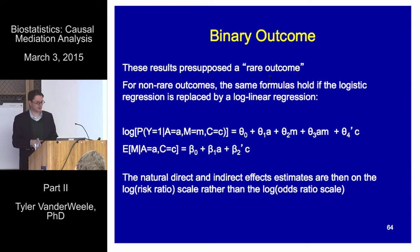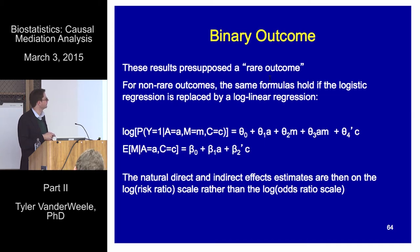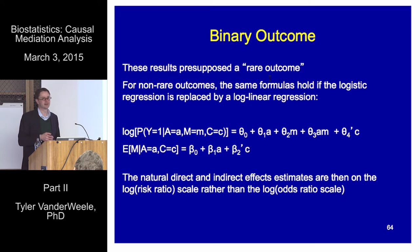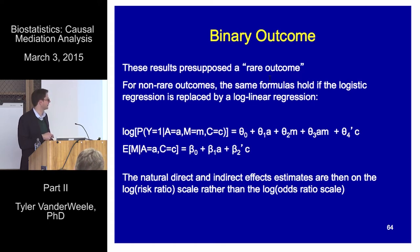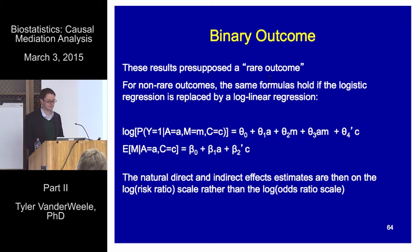These results presuppose a rare outcome. For non-rare outcomes, the same approach works — the same formulas work for a common outcome if you replace the logistic regression with a log binomial model. Those models don't always converge because the predicted probabilities don't always lie in the range 0 to 1. But when they do fit reasonably well, those same closed-form analytic expressions will work, with effects then interpreted on the log risk ratio scale rather than the log odds ratio scale.